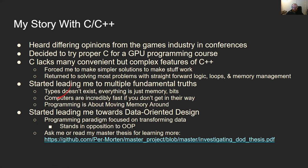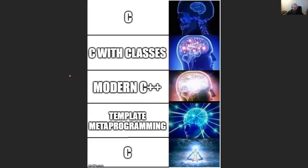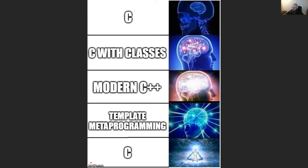I found a meme on Twitter that captures my journey: I started with C, then went to C with classes, then modern C++, then template metaprogramming, and then went back to C. When someone asked about the difference between the first and last C, the response was 'enlightenment' — because for me, my code got way easier to read and work with by dropping back to the C level. The other thing I really learned was that programming languages are essentially just tools — if programming is just about moving memory around, then languages are tools to help you move that memory around. Some really excel at that and others don't.